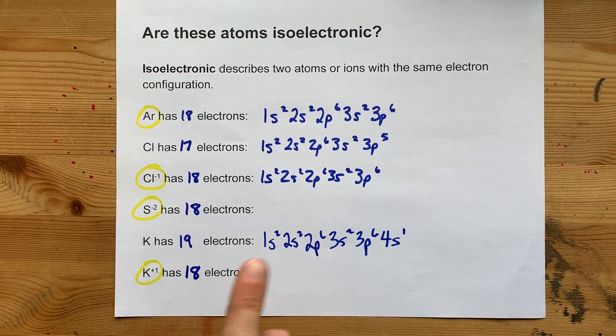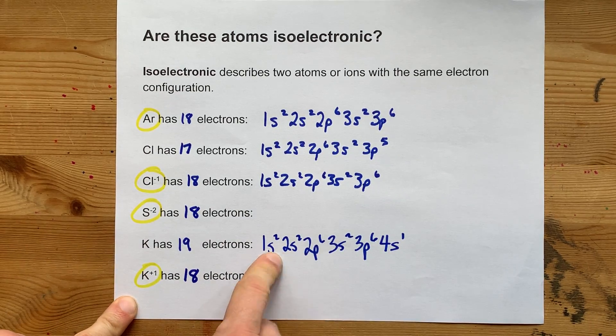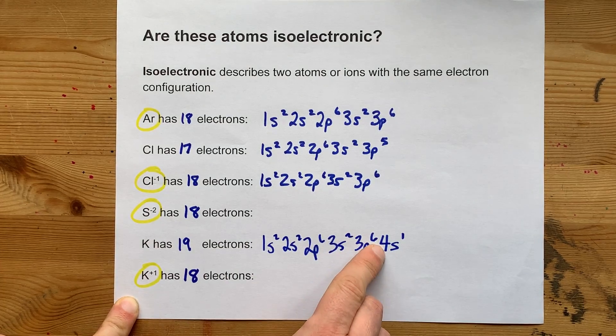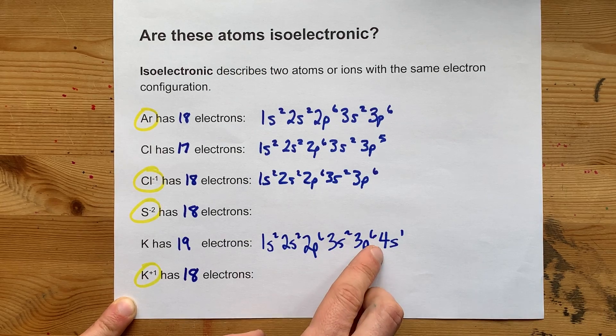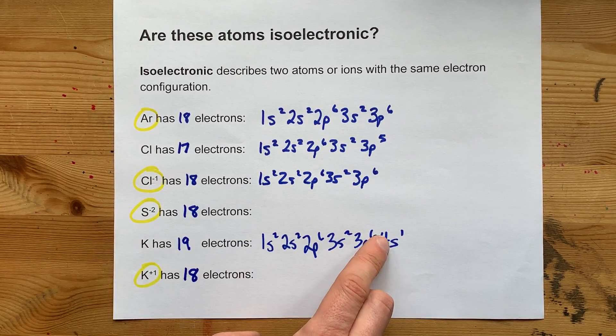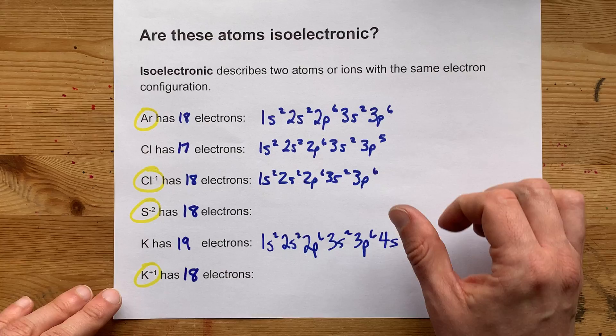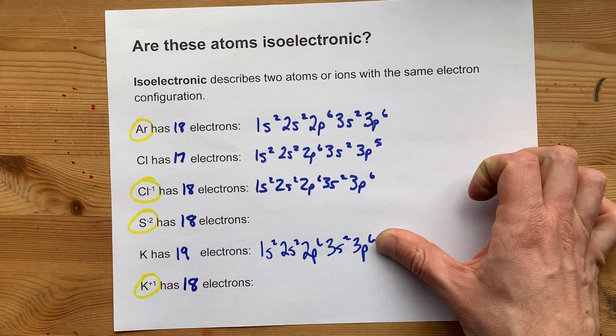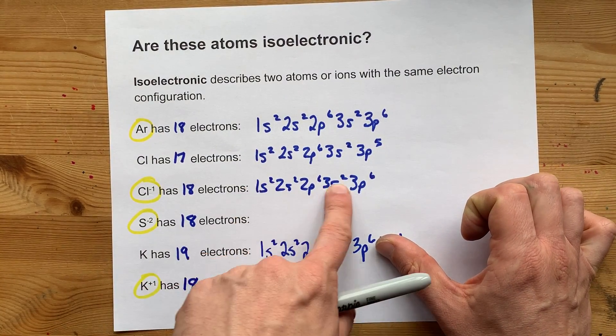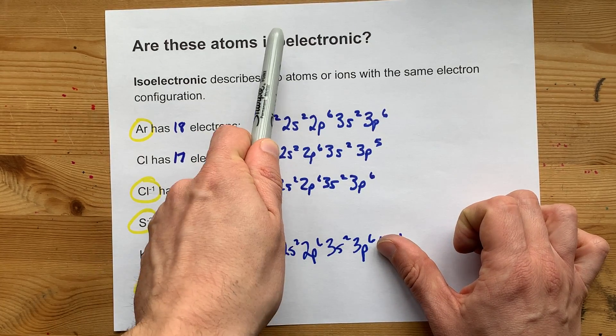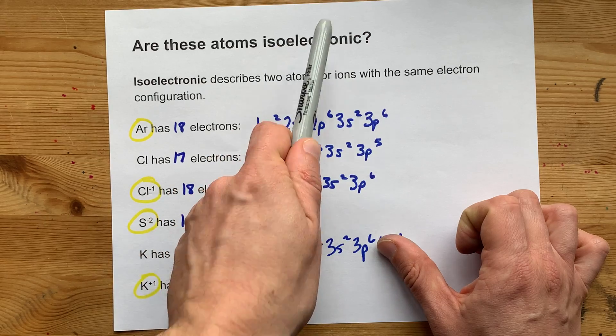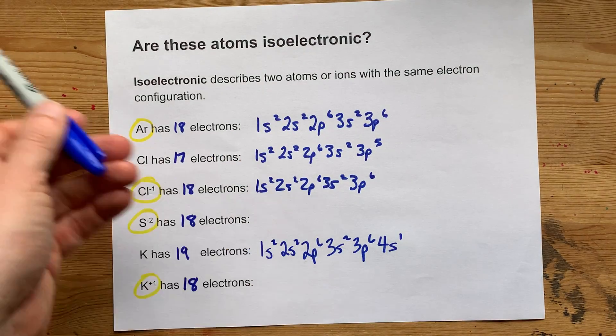Because when you remove electrons from an electron configuration, you always take them out of the highest n first. n is 1, n is 2, n is 3, n is 4. Take it out of that one first. That's the one that gets chopped off. Oh look, it's the same electron configuration as those others. Isoelectronic, same electron configuration.